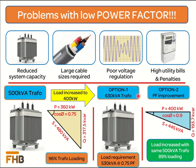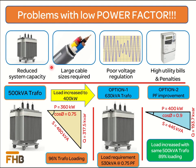To cater to this increase in load, we have two choices. The first option is to replace the existing 500 kVA transformer with the next available size of 630 kVA. The second option is to improve the power factor — using the commonly targeted value of 0.9. At 0.9 power factor and 400 kilowatt connected load, the kVA requirement reduces to 445 kVA, which is only 89% loading of the existing 500 kVA transformer. Lower power factors require larger and more expensive installed equipment.